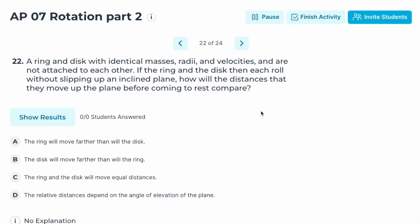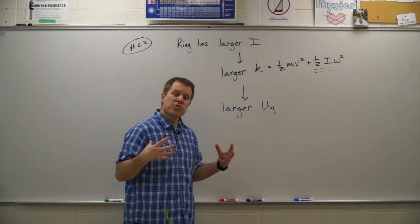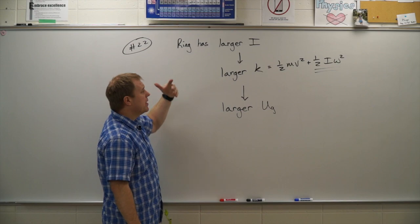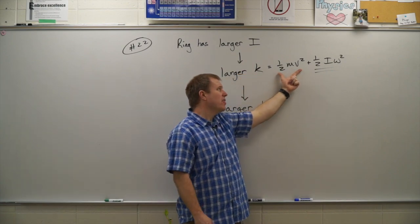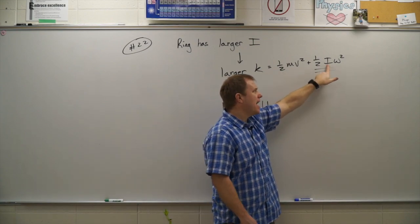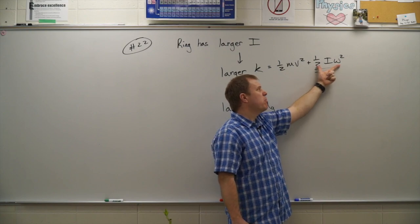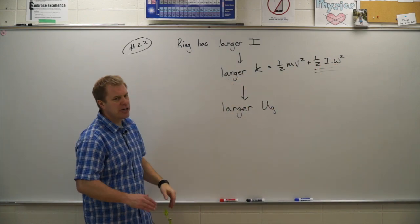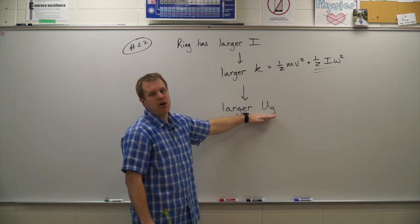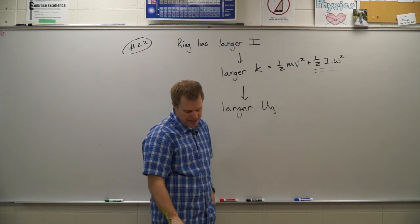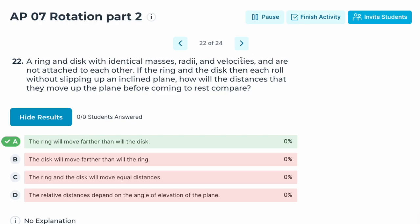Number twenty-two: a ring and a disc with identical mass, radii, and velocities roll without slipping up an incline. How do the distances they travel before stopping compare? The ring has the larger I value, giving it more total kinetic energy despite the same translational kinetic energy — its rotational kinetic energy is larger because I is larger and ω is the same. More total energy means it rolls higher up the ramp. Correct answer: A — the ring moves further than the disc.